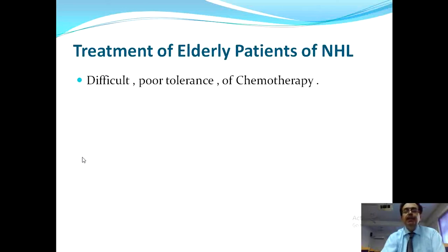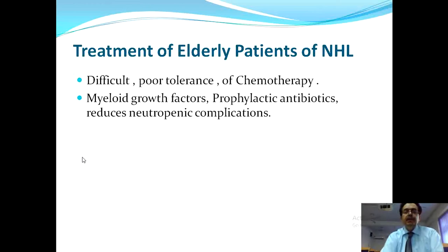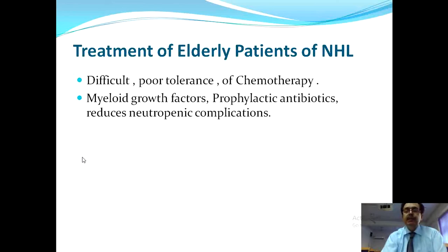Treatment of elderly NHL patients is difficult due to poor health, poor chemotherapy tolerance, and weak overall functional capacity. Myeloid growth factors and prophylactic antibiotics are offered to reduce neutropenic complications, as recurrent infections from neutropenia can be fatal in elderly patients.